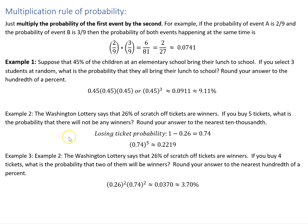In the second example, the Washington Lottery says that 26% of scratch-off tickets are winners. You buy five tickets — what's the probability there will not be any winners? Round your answer to the nearest ten-thousandths. So if you know that 26% are winners, then one minus 26% would be 74%, or 0.74, which is going to be the losing probability.